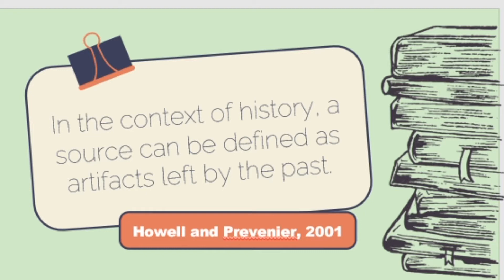There are several definitions of the word 'source.' Merriam-Webster defines a source as a first-hand document or primary reference work. But for Howell and Prevenir, in the context of history, a source can be defined as artifacts left by the past — meaning any object from the past can be a source: old paintings, remains, written documents, etc. As such, they may provide evidence about the existence of an event.